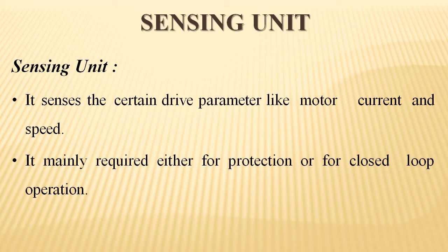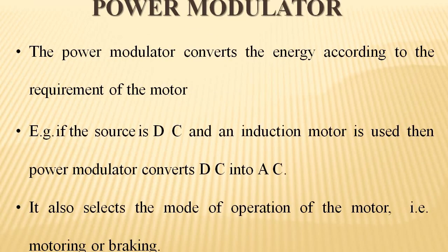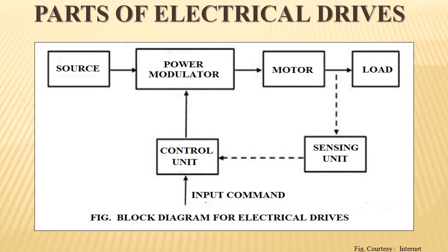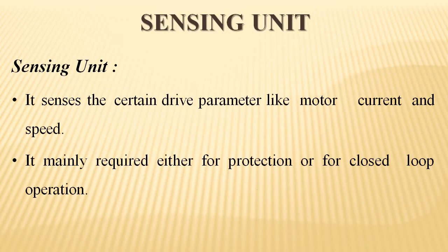The next one is the sensing unit. The sensing unit gets a signal from the motor and load and gives input to the control unit. It senses certain drive parameters like motor power, current, and speed. It is mainly required either for protection or for closed-loop operation of the overall system.